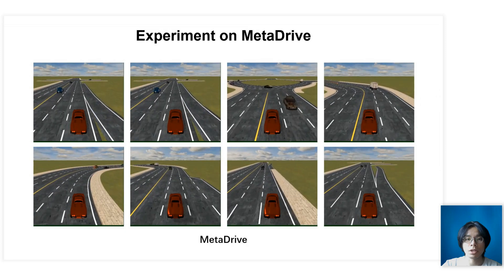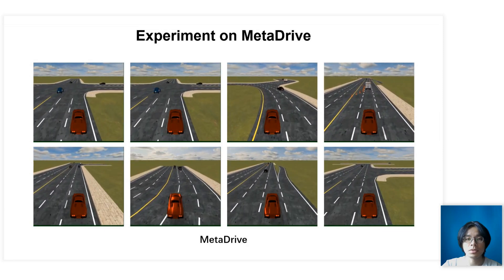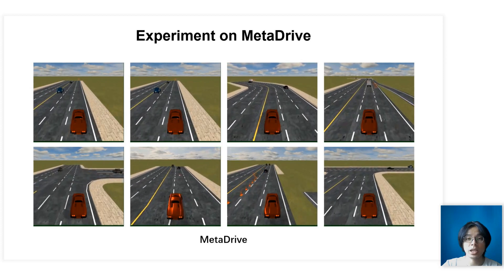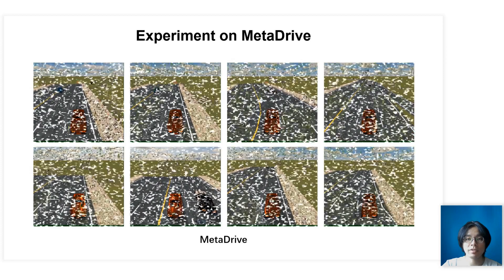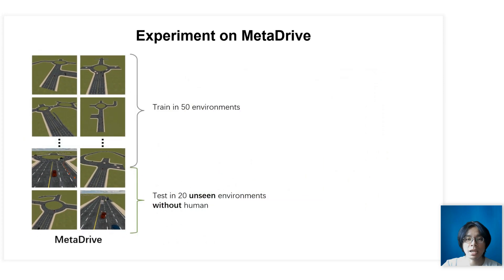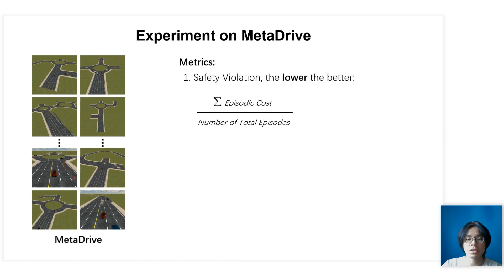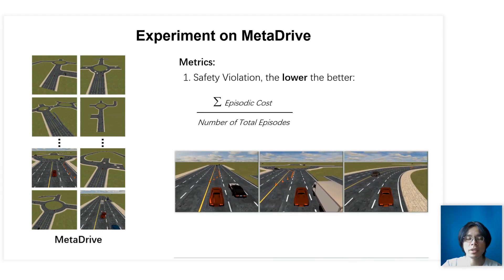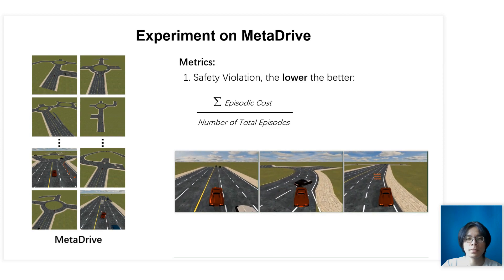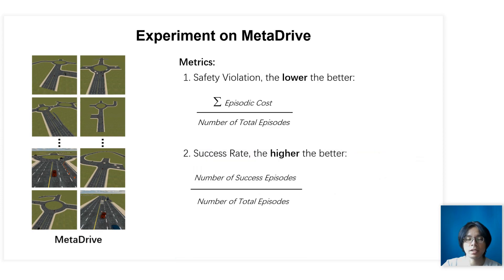HACO is benchmarked on MetaDrive, a driving simulator that can produce countless driving scenarios. Since we aim to learn a generalizable driving policy, we split the generated maps into a training set and a test set. HACO is trained with human on the training set but evaluated without human on the test set. Two metrics are used: the first is safety violation, which is the average number of episodic collisions such as collisions with vehicles, obstacles, and sidewalks; the second is success rate, which is the average destination arrival rate.